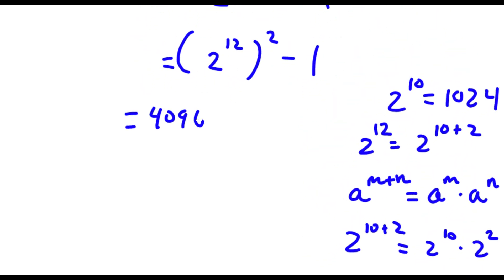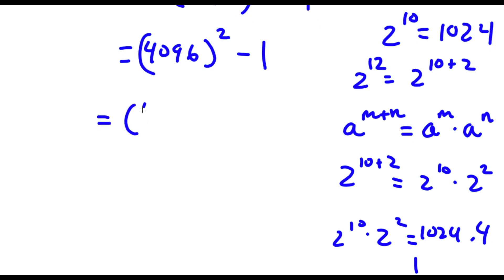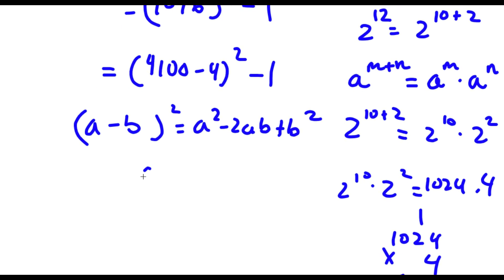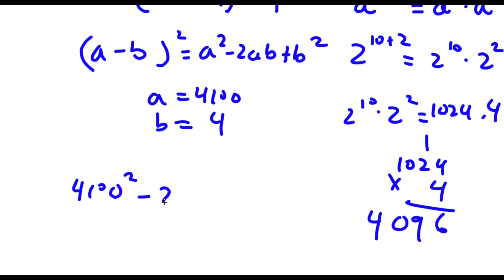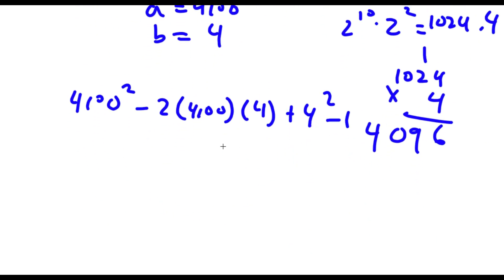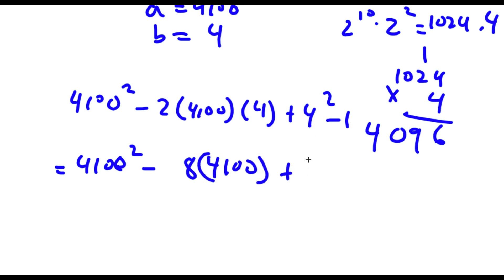So now this is the same thing as 4096 squared minus 1. Now 4096 we can rewrite as 4100 minus 4, squared, minus 1. And if I have something in the form a minus b squared, it's the same thing as a squared minus 2ab plus b squared. So in this case a is equal to 4100 and b is equal to 4. So now I have 4100 squared minus 2 times 4100 times 4 plus 4 squared, and we can't forget the minus 1 at the end.